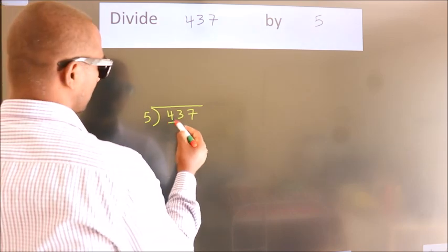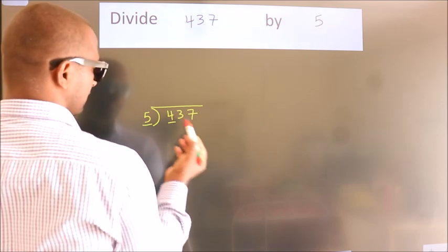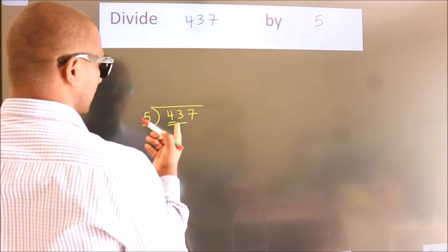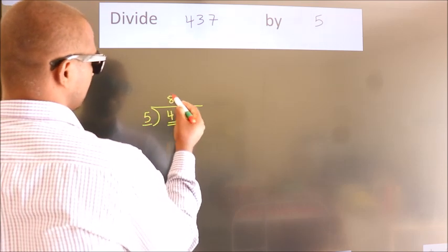here we have 4, here 5. 4 smaller than 5, so we should take two numbers, 43. A number close to 43 in 5 table is 5 eights 40.